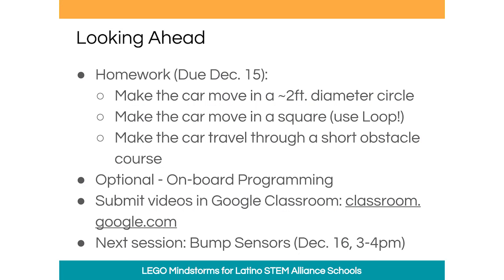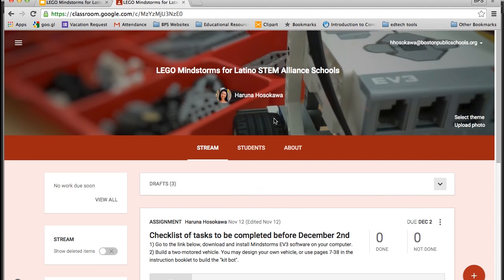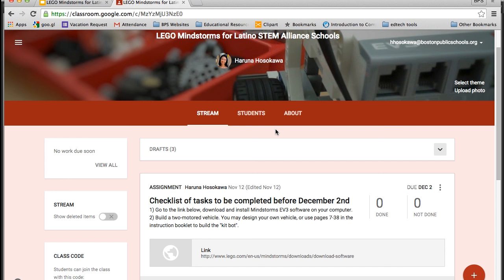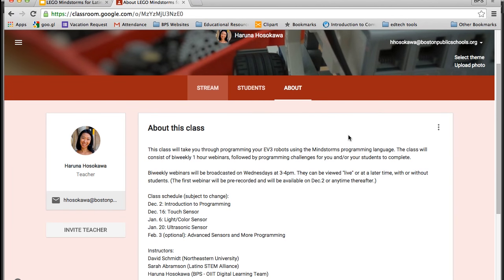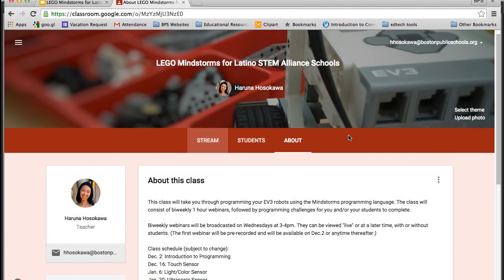And the next session will be covering bump sensors, which are also called touch sensors, and that's going to be on December 16th. So let me just show you quickly the Google Classroom interface, which looks like that. Once we have the assignment posted, there will be a link to submit assignments, and you will be able to send us your video from there. Google Classroom has a nice phone app, so if you're using your phone to record your video, you can download an app on your phone and send us a video right from your phone. If you go into the About section, you'll find all of our contact infos, so you can email us from there if you have any questions.